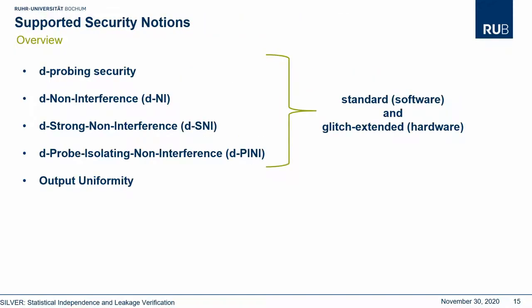On this slide you can see an overview of our supported features. We support checks of all well-established security and composability notions, ranging from d-probing security, over D-non-interference and D-strong-non-interference, to D-probe-isolating-non-interference. All these checks can be performed in the standard probing model, which is mostly relevant for software, and also in the robust probing model in the presence of glitches, which is relevant for checking hardware implementations.